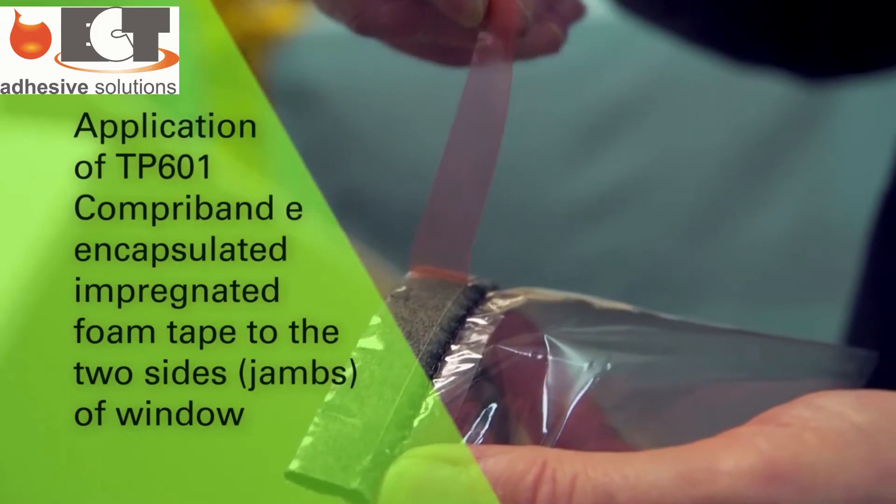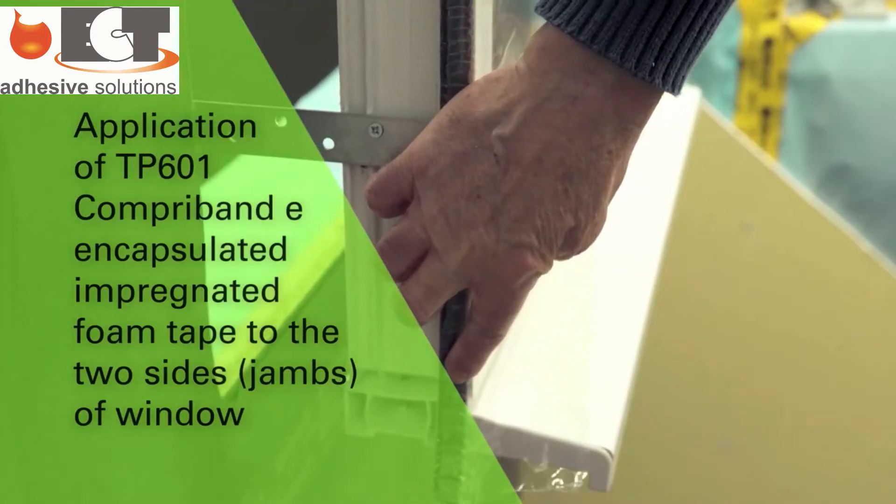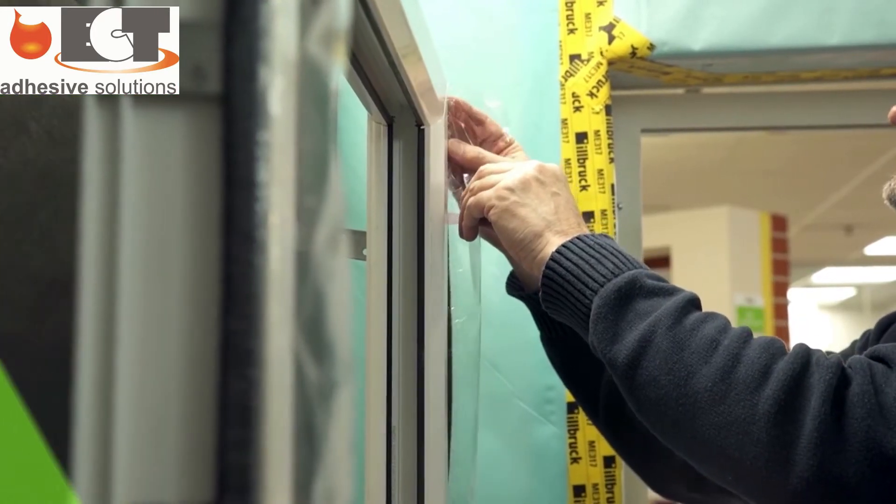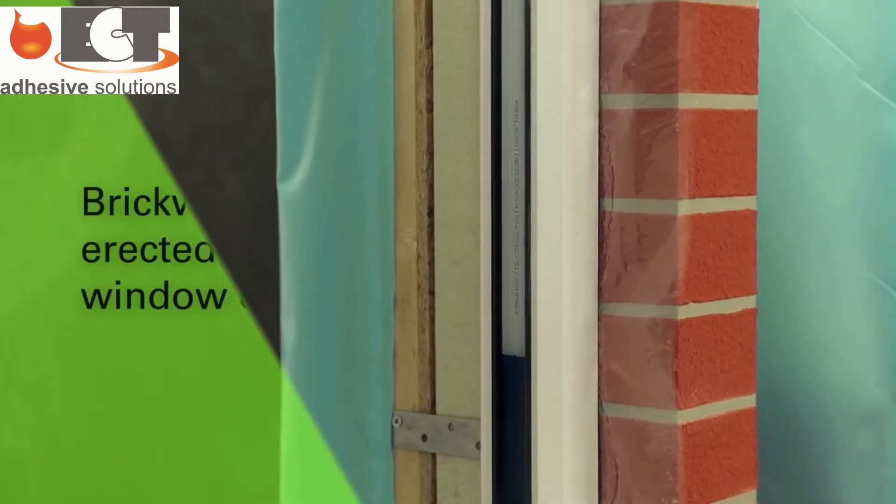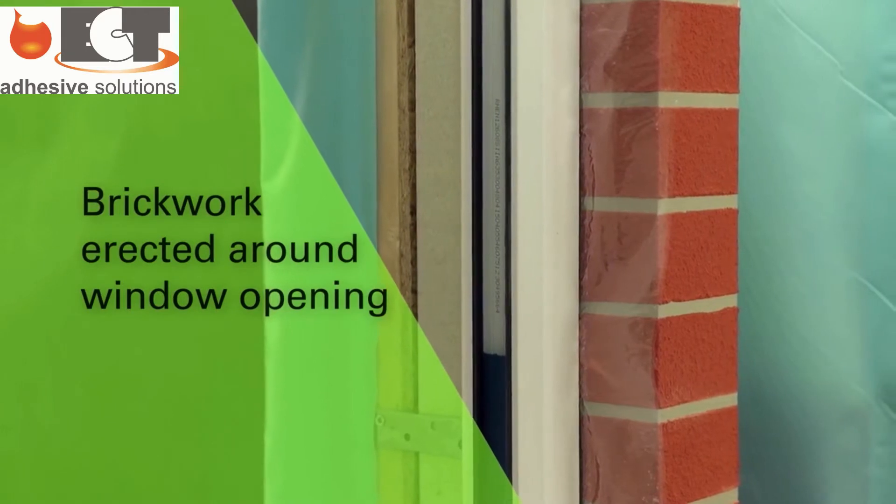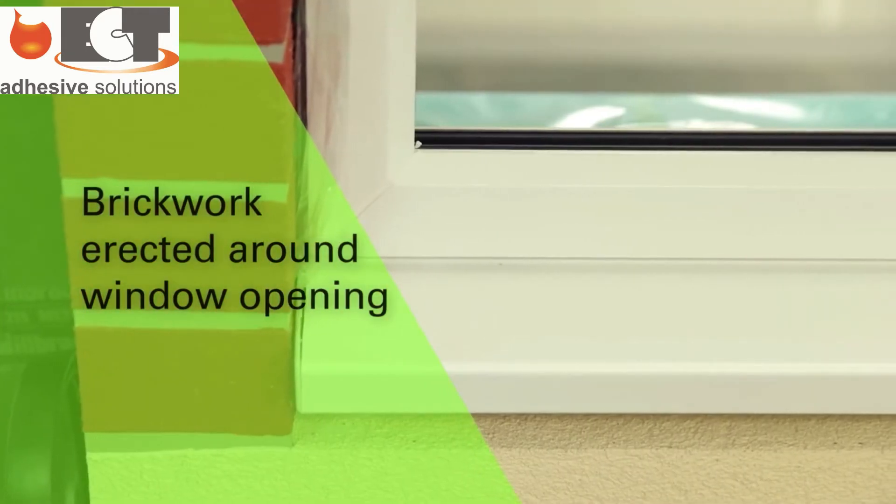With the window fixed in the timber frame opening, Compreband TP601 encapsulated impregnated foam tape is applied to the window jams. The encapsulating sleeve is left in place and the external brick skin erected around the window.